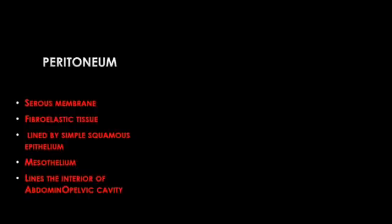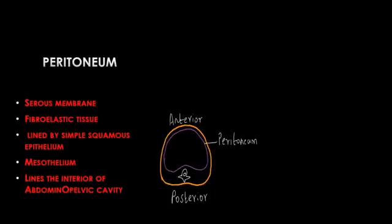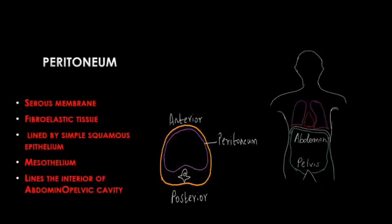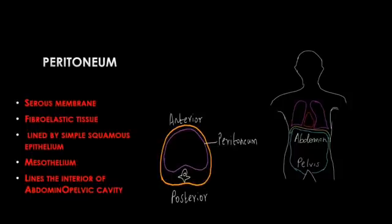So what is the peritoneum? It is nothing but a serous sac lined by the serous membrane. This serous sac lines the inner aspect of the abdominal wall — it is present within the abdominal cavity. There are other serous sacs in our body: the two pleural sacs and the pericardial sac present in the thoracic cavity. In the abdomen we have the largest serous sac of our body, which is called the peritoneum.